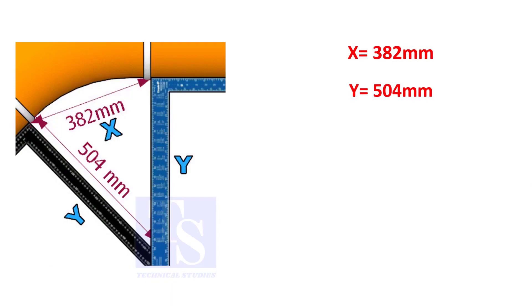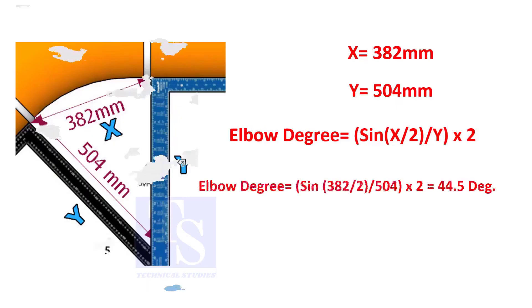Assume that the value of X is 382 and the value of Y is 504. Divide the half value of 382 by 504 and convert the value to sine. Then multiply by 2.